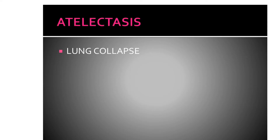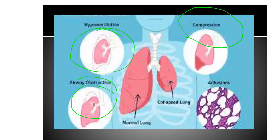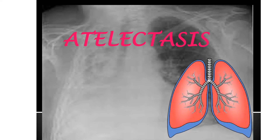So what are the possible causes of atelectasis? The possible causes are hypoventilation, airway obstruction, and compression. With these three causes, it will lead to collapsed or atelectatic lungs. Basically, this is what happens with ventilation — the breathing pattern involves inhale and exhale, and air flows from the environment going into the lungs.